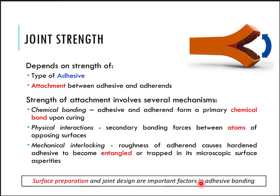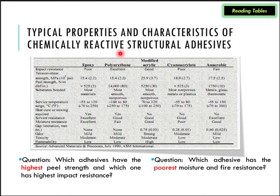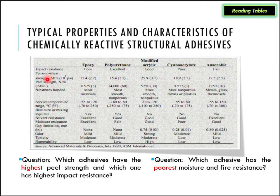The types of adhesives are based on strength. We have natural adhesives, inorganics, and synthetic adhesives. Synthetic adhesives are a part of thermoplastic and thermosetting polymers. Based on these types, we can classify different adhesives such as epoxy, polyurethane, modified acrylic, cyanoacrylate, and anaerobic-based adhesives. Each type has its own properties.